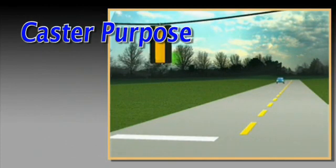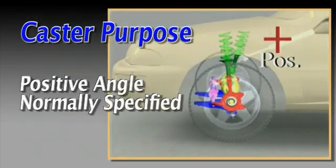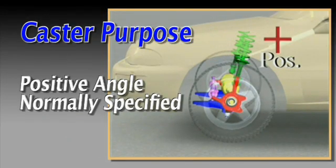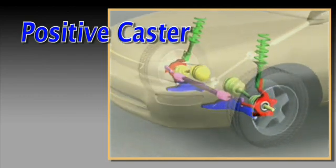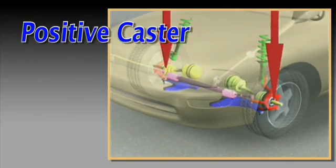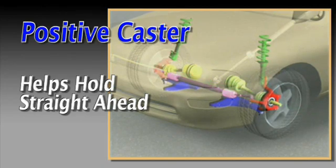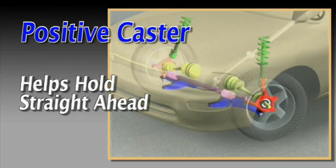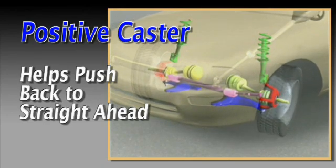Caster is often used to enhance straight-line stability. A positive angle is normally specified for this purpose. With positive caster, vehicle weight on each spindle helps hold them in a straight-ahead position. When the wheels are steered, this same load helps push the spindles back to straight ahead.